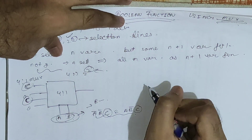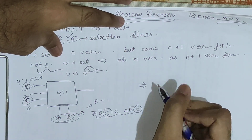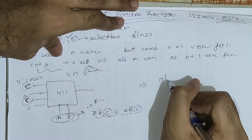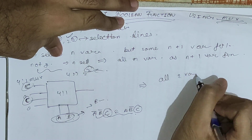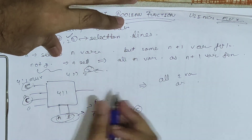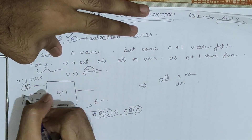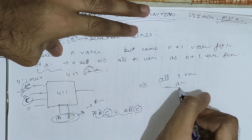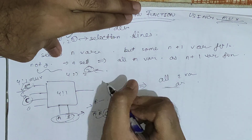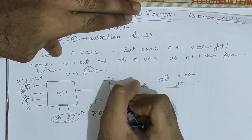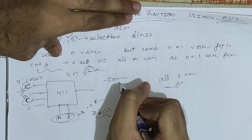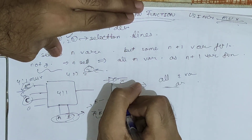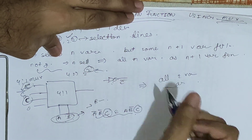But if we have a NOT gate available, we can implement all 2-variable functions as well as all 3-variable functions, because along with c we can also write c-bar. Earlier, without the NOT gate, we could not obtain c-bar. Now with the NOT gate, we can get c-bar as well.